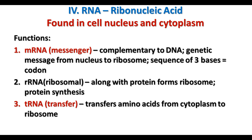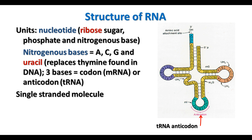The third kind of RNA is transfer RNA. Transfer RNA actually acts to transfer the amino acids from the cytoplasm to the ribosome. The transfer RNA has one end that's attached to a particular amino acid, and the other end has what's called an anticodon that is complementary to the messenger RNA codon. We'll see how that works to help put the amino acids together in the right order.